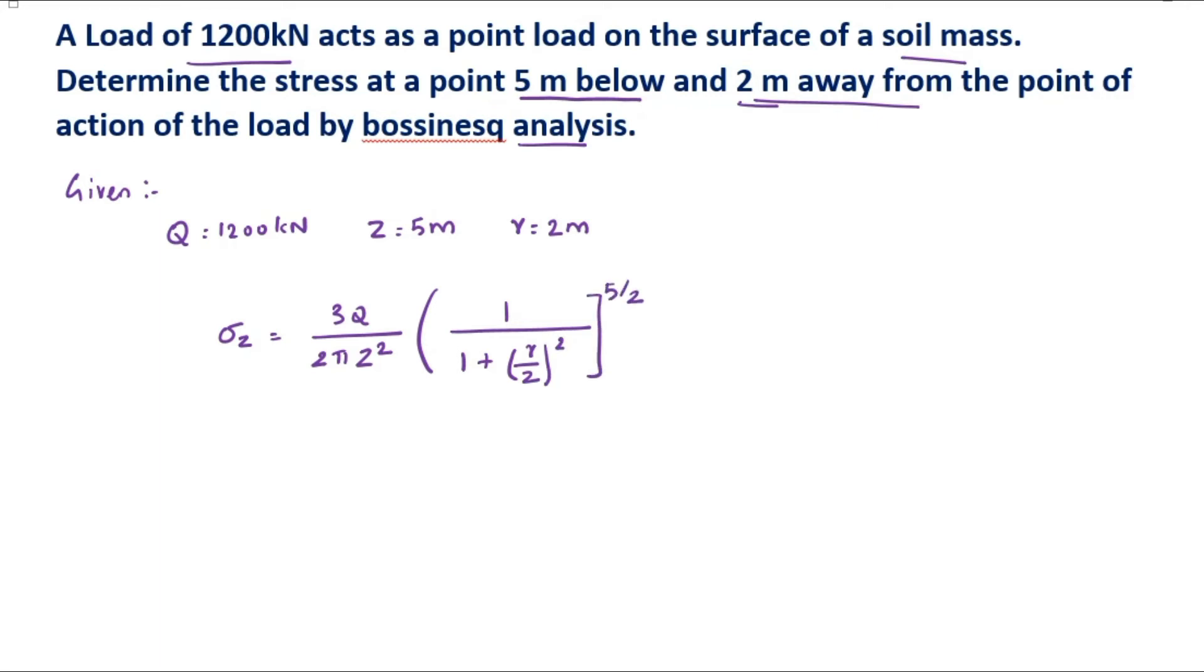We know all the values. Substituting into the formula: (3×1200)/(2π×5²) × [1/(1+(2/5)²)]^(5/2).